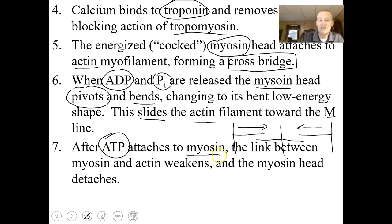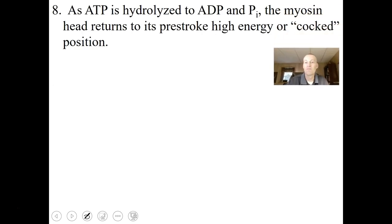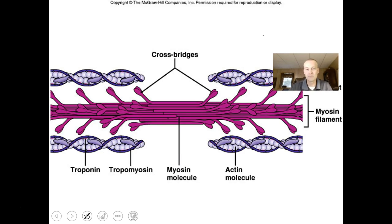After ATP attaches to the myosin, the link between myosin and actin will weaken and the myosin head will detach. Myosin can attach to and detach from actin, but you have to have ATP for that to occur. As ATP is hydrolyzed into ADP and inorganic phosphate, the myosin will become cocked and return to its high energy form, ready to grab hold again and keep pulling on actin.